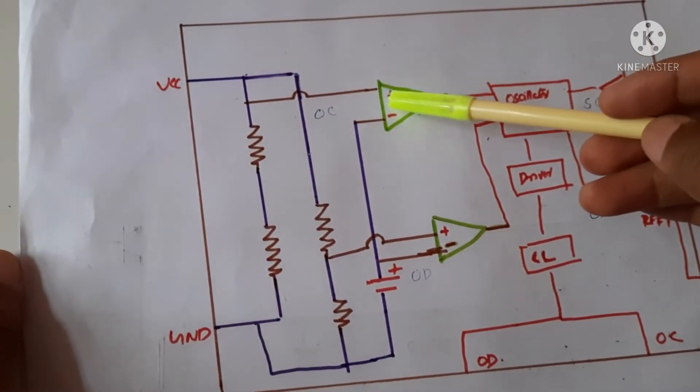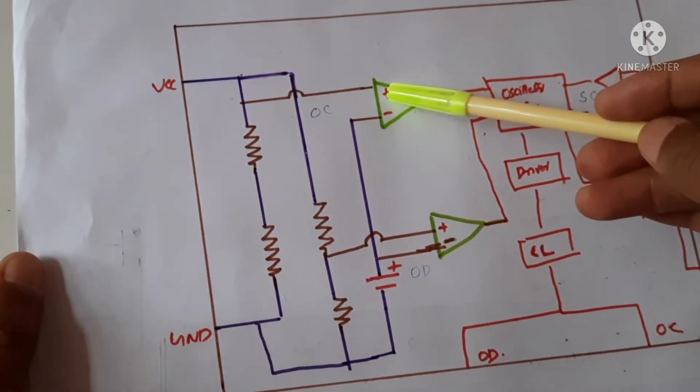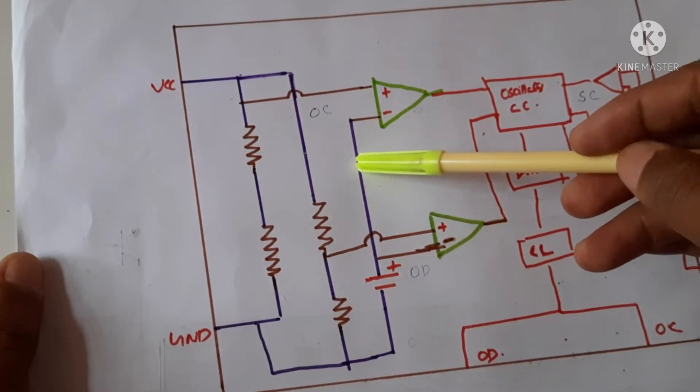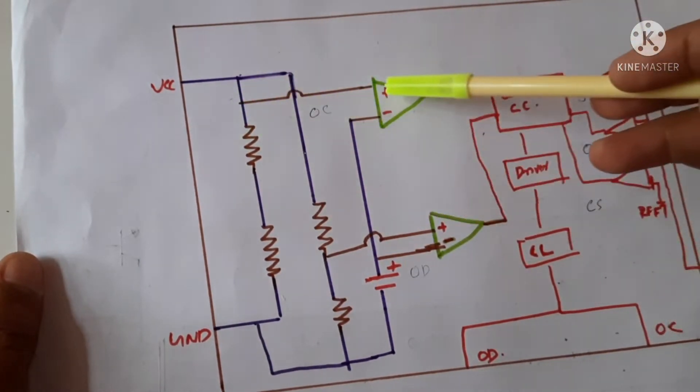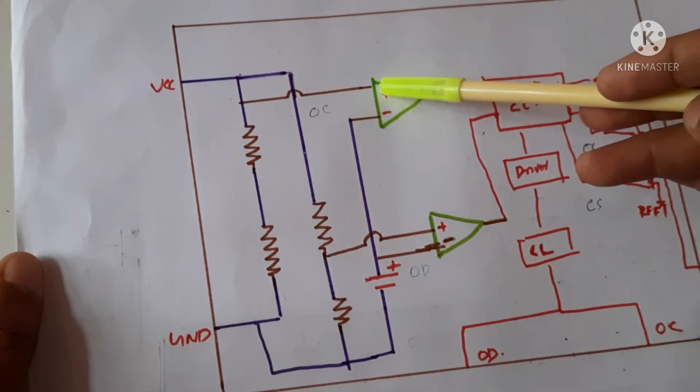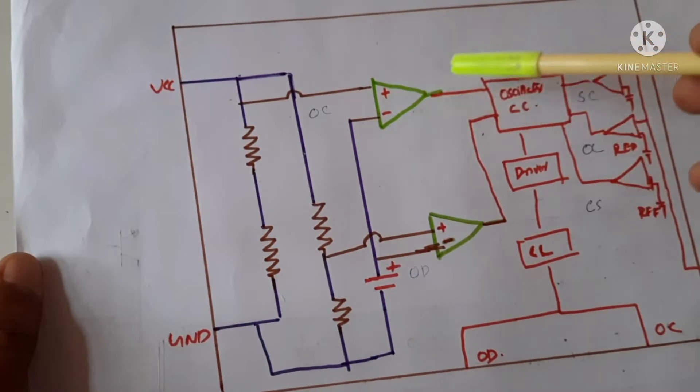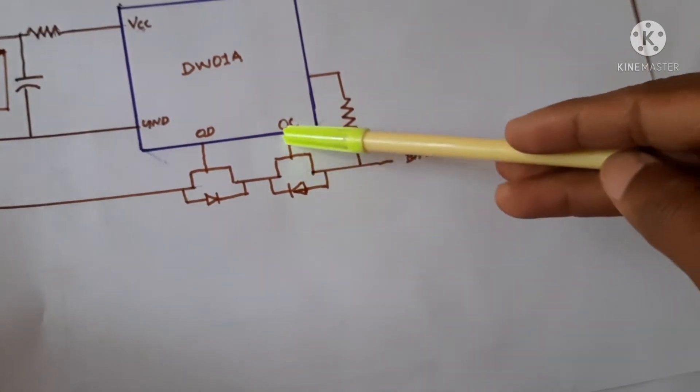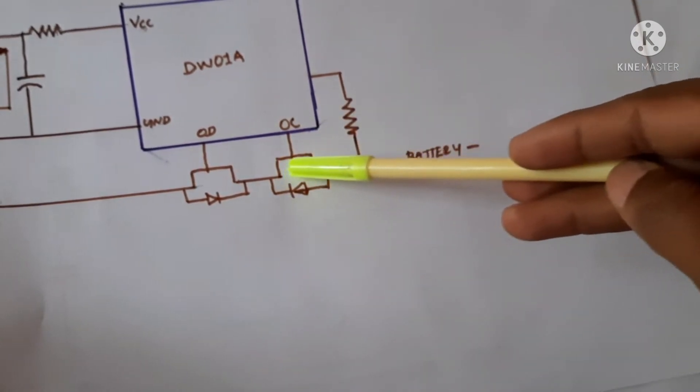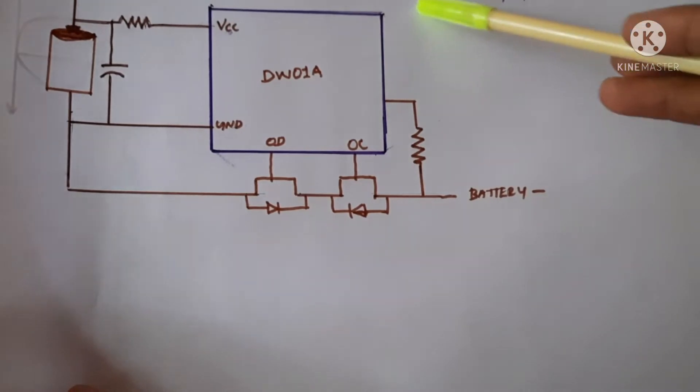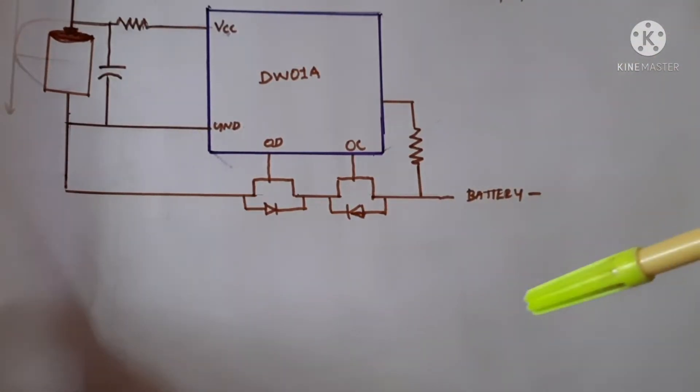Now this is the comparator that is comparing the voltage we have given with the reference voltage. If the voltage is more than 4.2V this comparator sends a signal to the control section and this control section will turn off the overcharge MOSFET. Then this MOSFET is off there will be no charging anymore. This is how it works for the voltage.